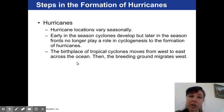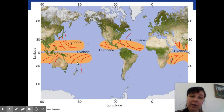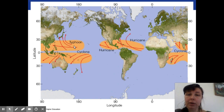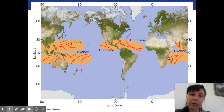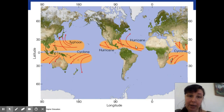Hurricane formation locations can be variable in location and season, but there are clearly defined regions. A tropical cyclone must form within a Hadley cell because it requires a warm ocean surface. These are the regions where tropical cyclones form — called hurricanes in the Atlantic, typhoons in the western Pacific, and cyclones in the Indian Ocean.